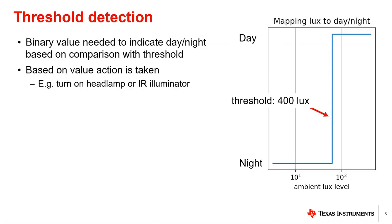Unlike brightness control, where the sensor reading is considered over a range of light intensities, in day versus night detection a threshold light level is set. Above the threshold is considered day, and below the threshold is considered night. Based on this determination, an action is taken, such as turning a headlight or an IR illuminator on or off.